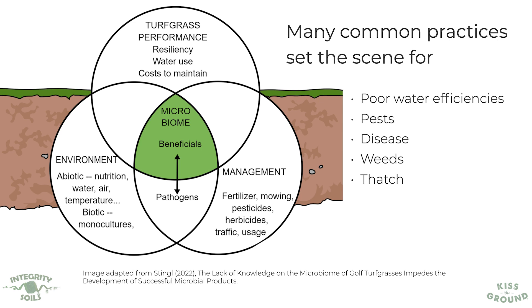Then there's what we're doing around our management: the types of fertilizer and inputs we're using, how often and how low we're mowing, pesticides, herbicides, and areas that receive a lot of traffic. These kinds of things are going to have a huge impact on outcomes and the performance of that turfgrass itself.